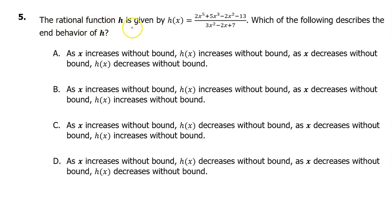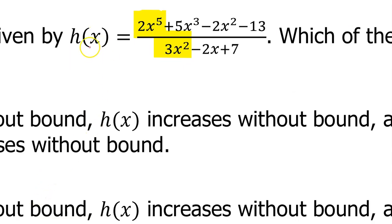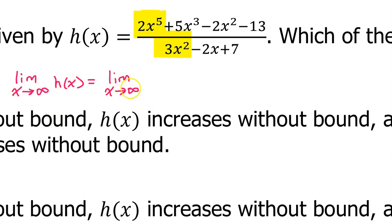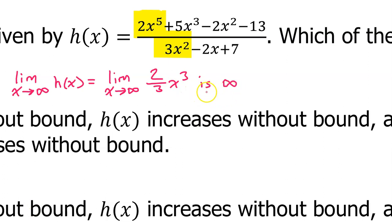Number 5. The rational function h is given by h of x equals this expression. Which of the following describes the end behavior of h? The end behavior of h is dictated only by the leading terms. The right end behavior of h will be the same as the right end behavior of 2x to the fifth power over 3x squared, which simplifies to 2 thirds x to the third power. As x approaches infinity, this expression gets bigger and bigger, so the right end behavior is positive infinity.